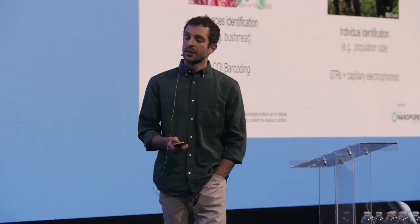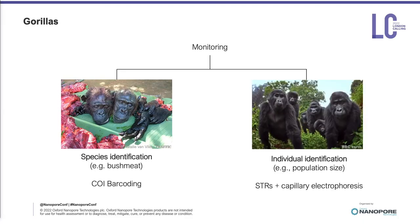In order to reverse this trend, we need to come up with an effective way to monitor changes in wild gorilla populations. To do that, we need a tool that allows us to identify species of gorilla — the four different species.